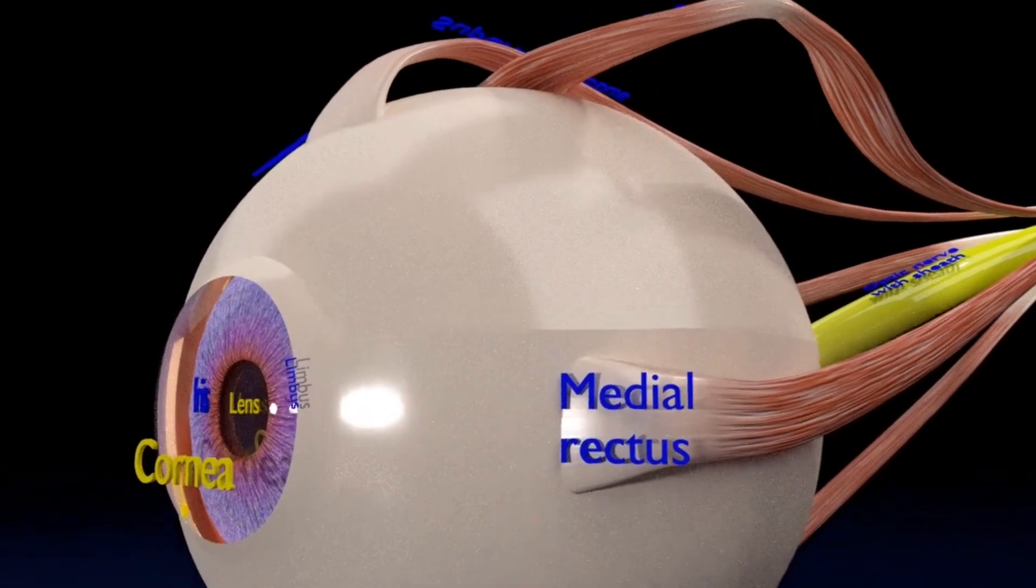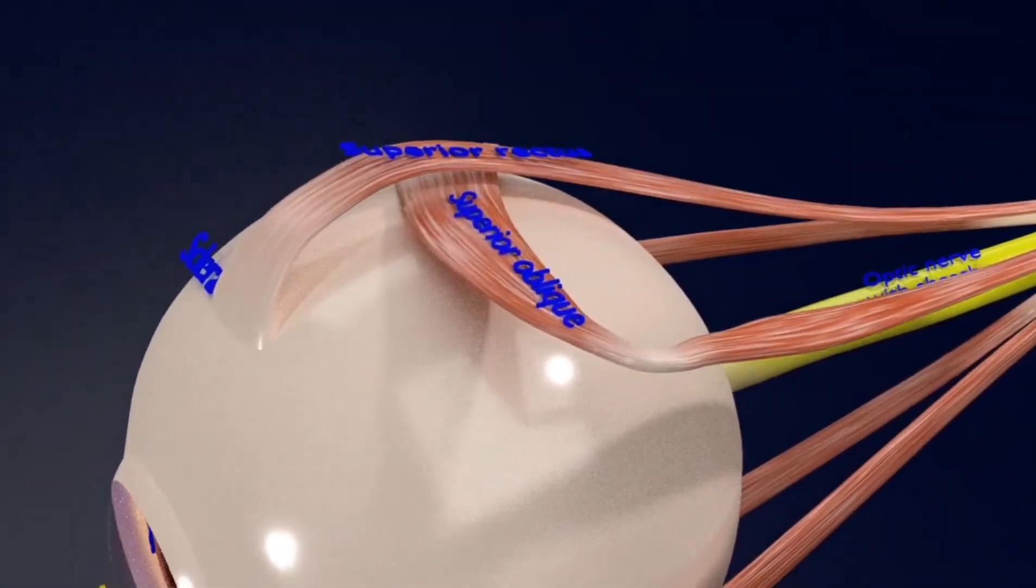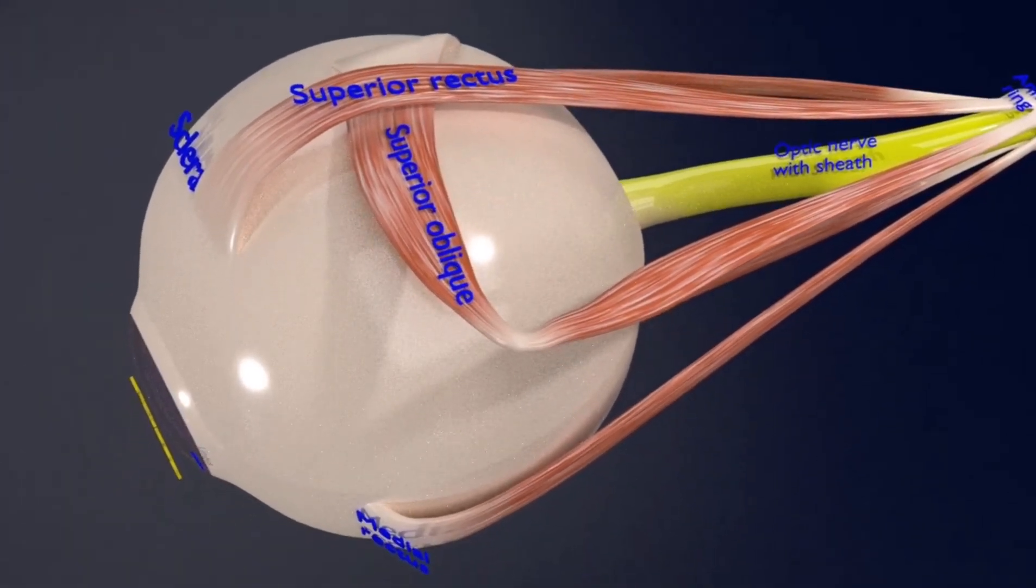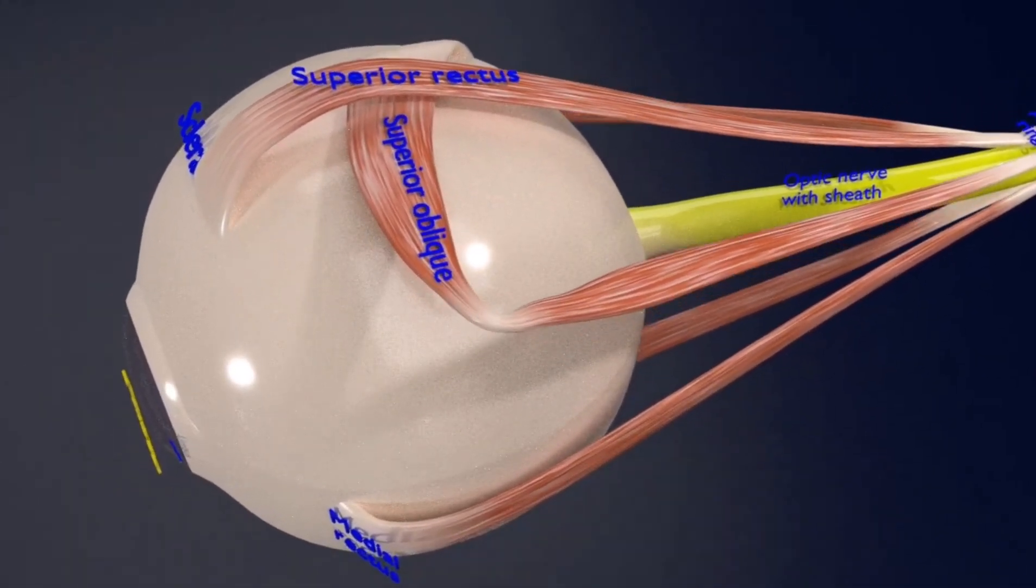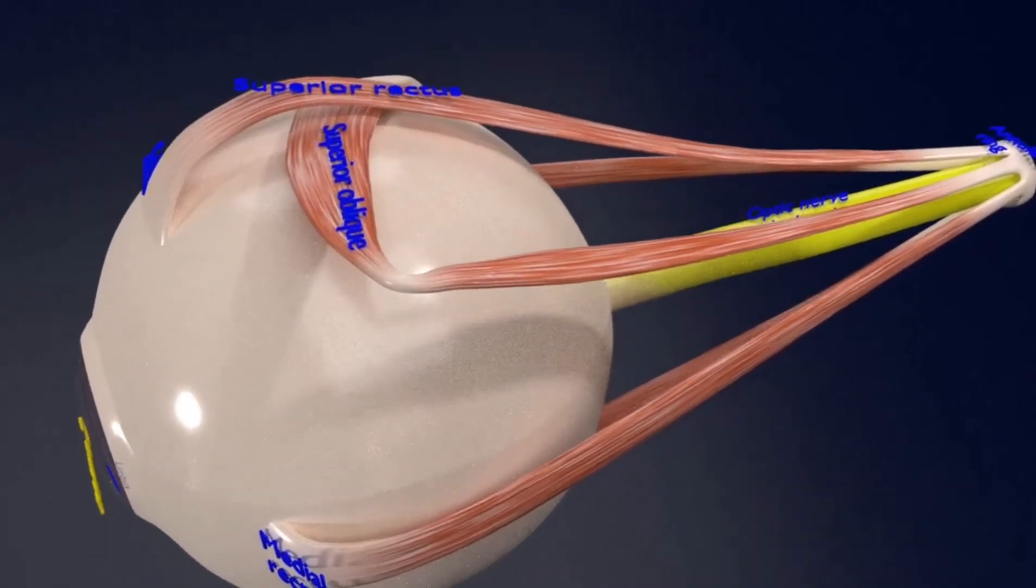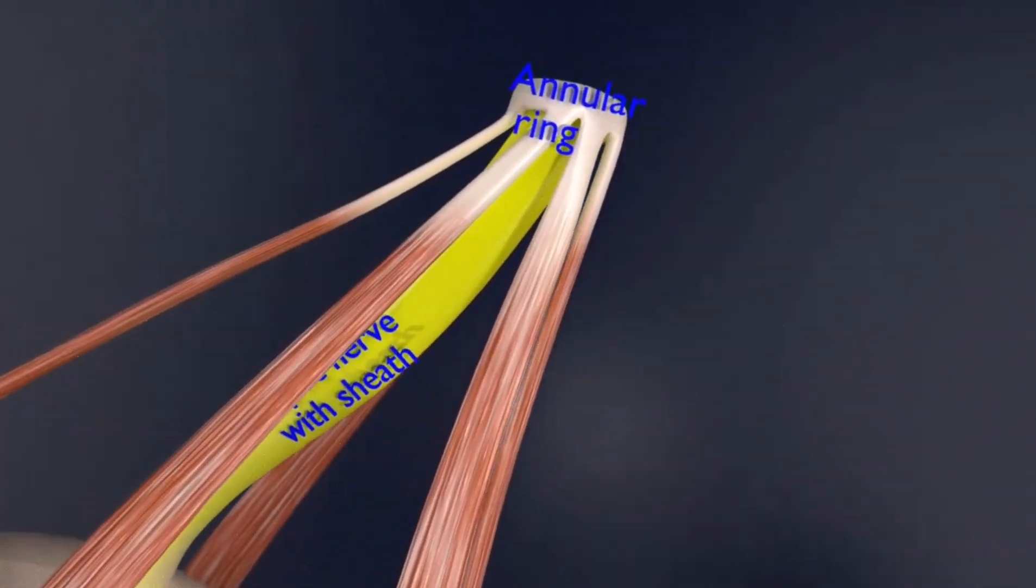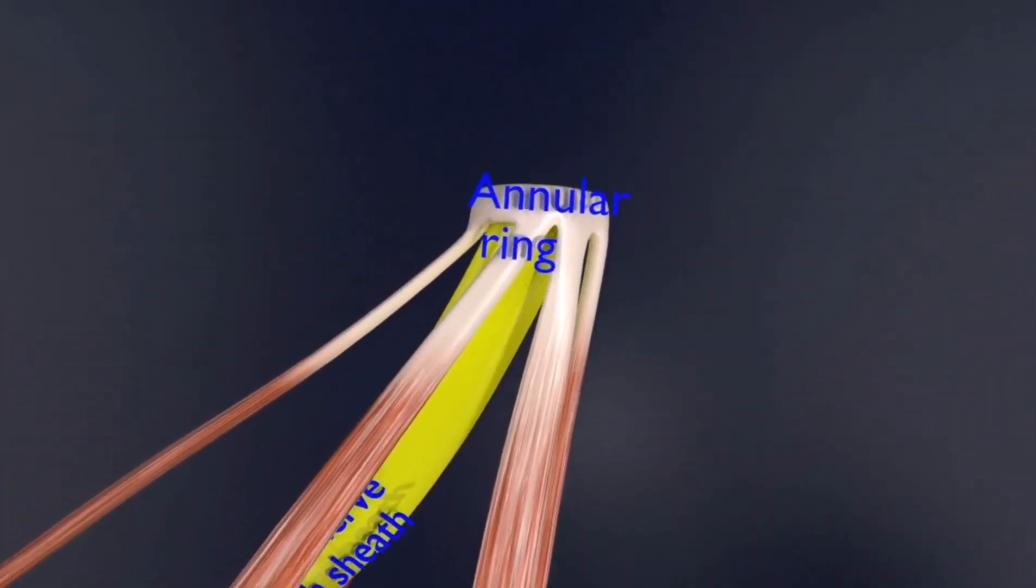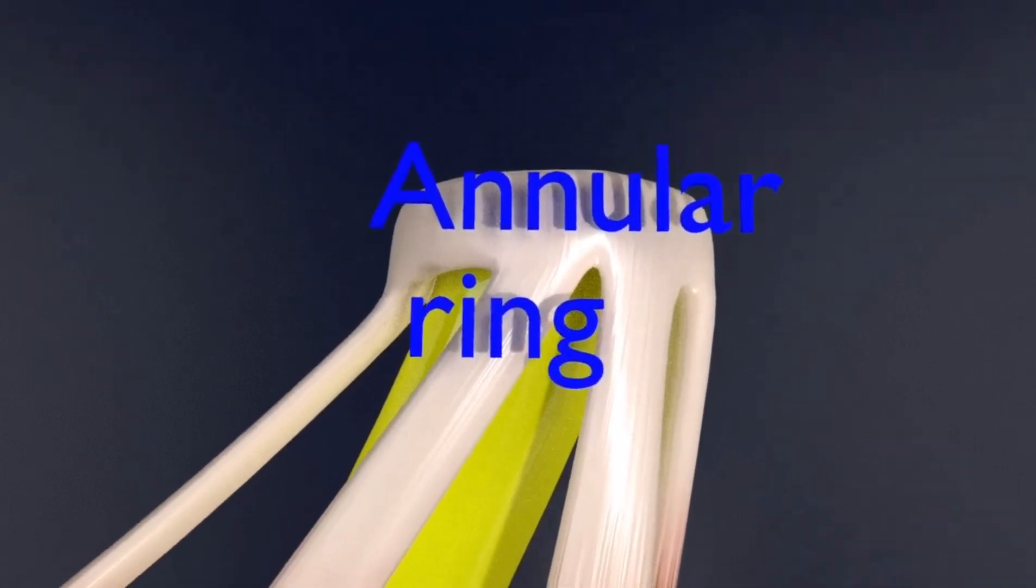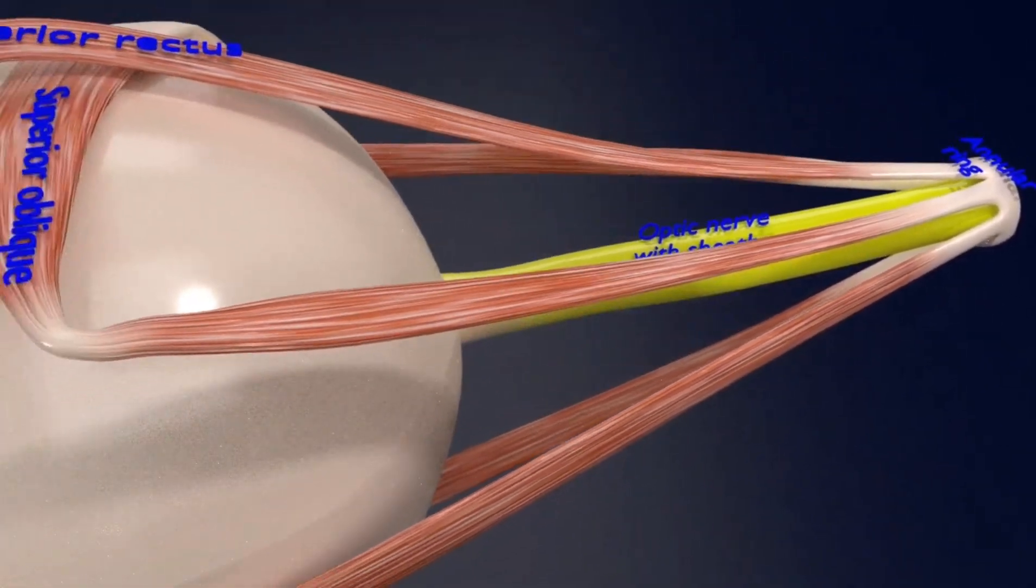All these muscles are ultimately attached to the tendinous ring. This ring is also called the annular ring. This ring surrounds the optic nerve, and is also known as the annular tendon or common tendinous ring. It's a ring of fibrous tissue, and it is the common origin of muscles except the inferior oblique.